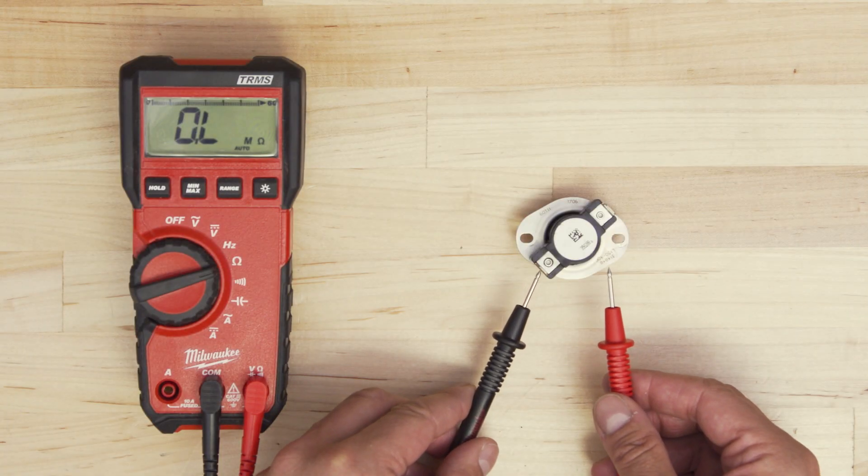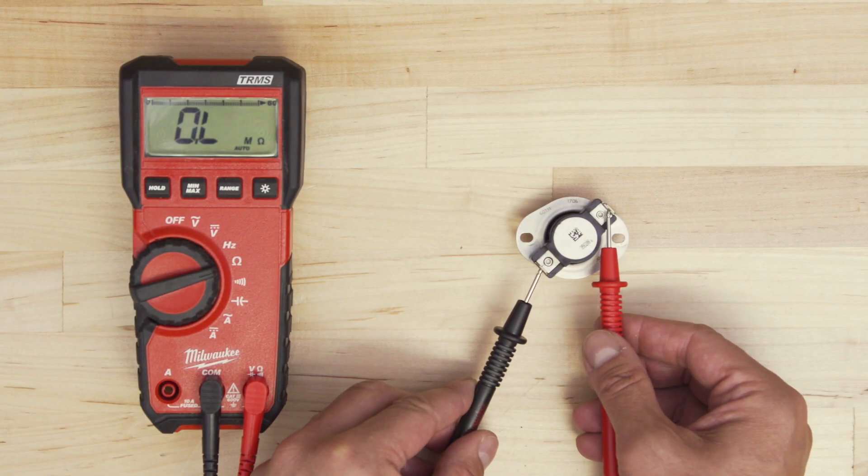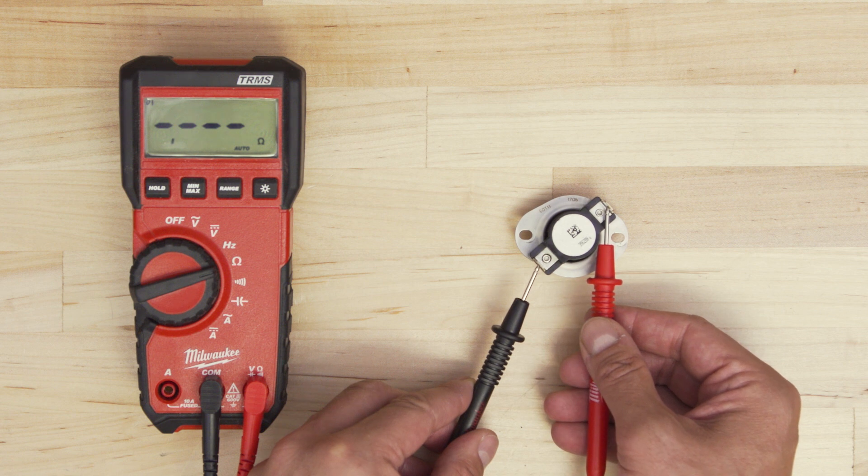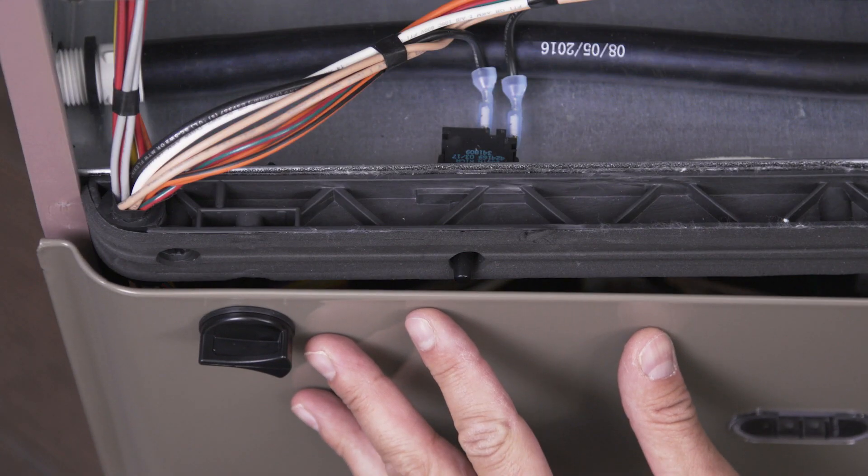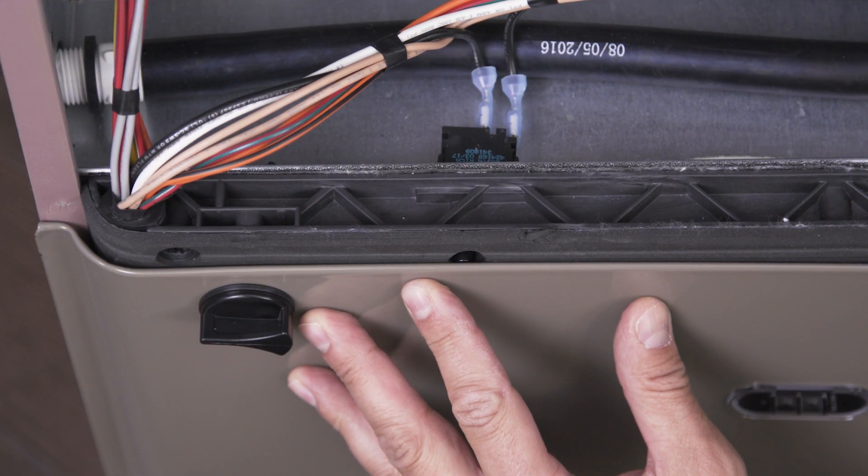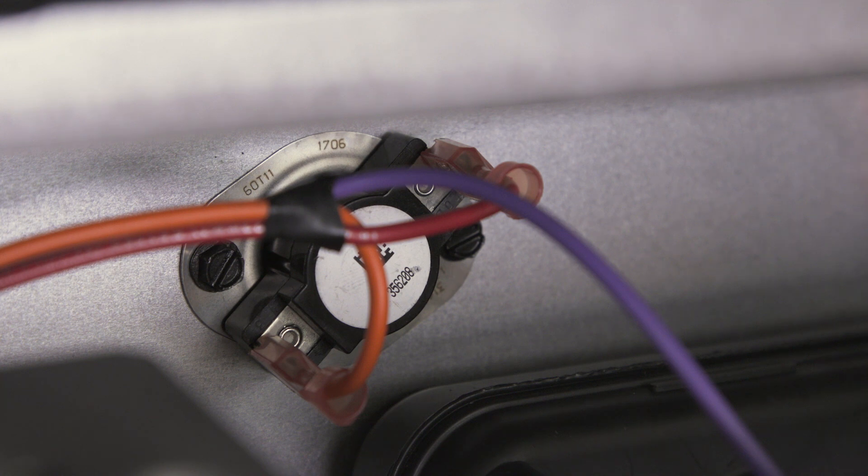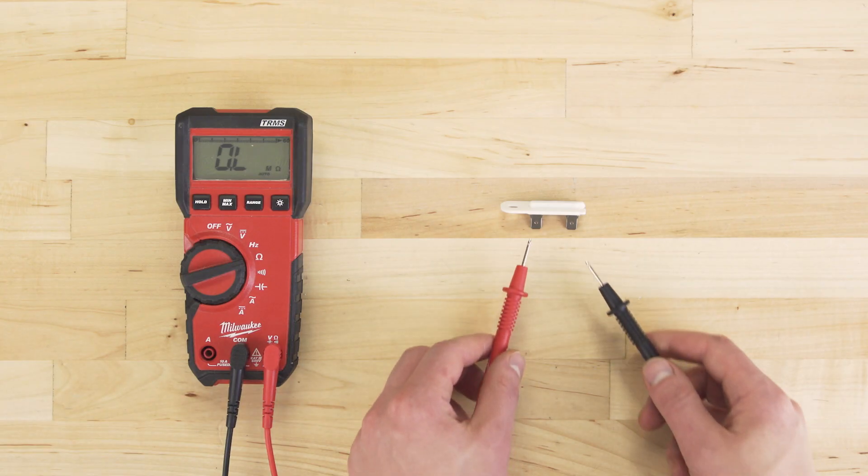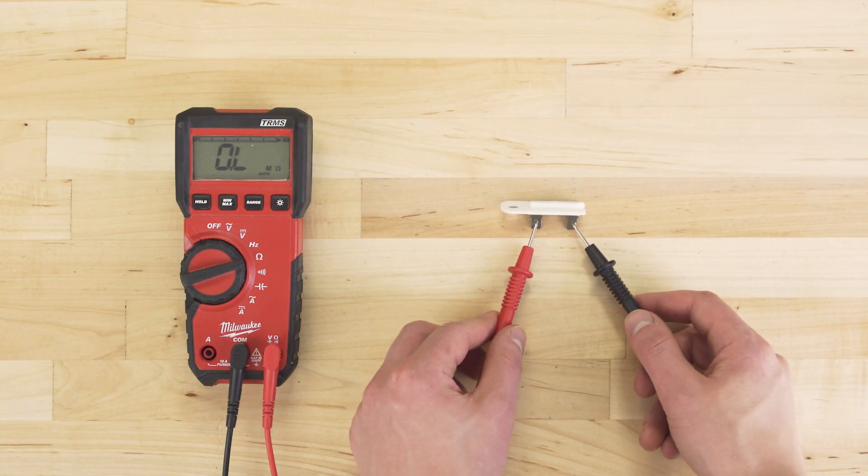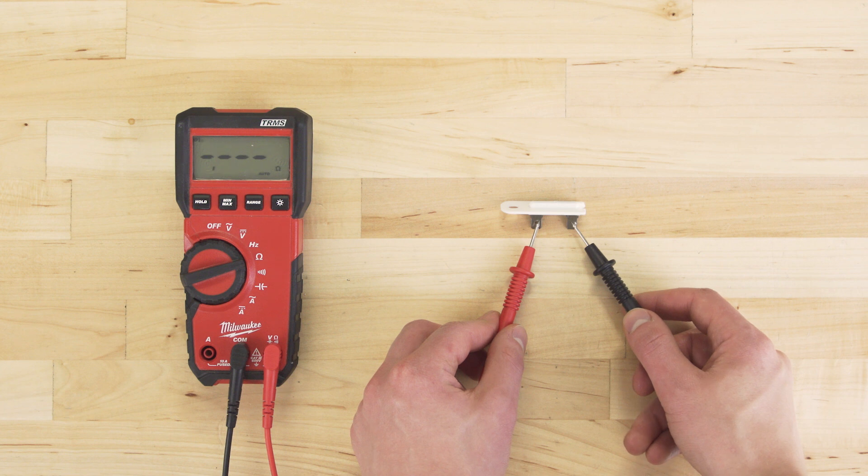If there is continuity, you'll get a reading above zero ohms. But the resistance will vary between load or non-load components. Non-load components, such as switches, thermostats, or fuses, provide an unrestricted path for the electricity to pass through. These will typically have a resistance reading between 0 and 1 ohms.